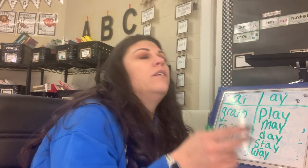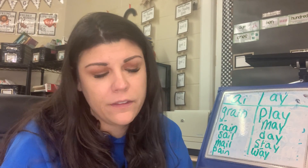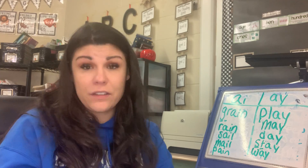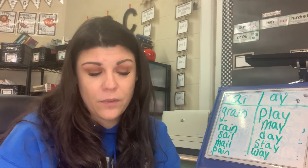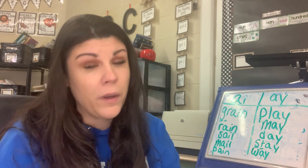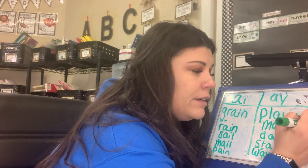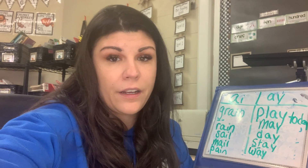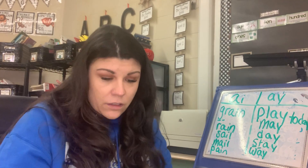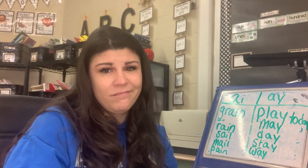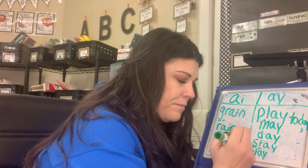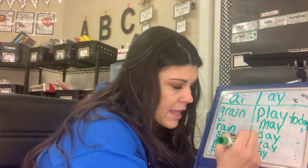Two challenge words — one is A-Y and one is A-I. The super easy challenge word is today. We know day from up here, and we know how to spell to. So we have T-O-D-A-Y. Today. The last challenge word is a tricky one: afraid. Like, I'm afraid of the dark. A-F-R-A-I-D. Afraid.